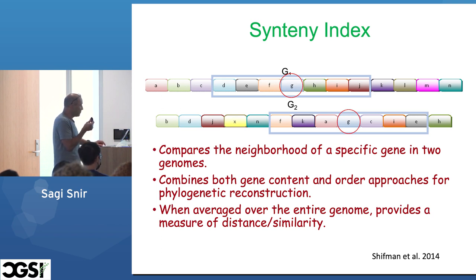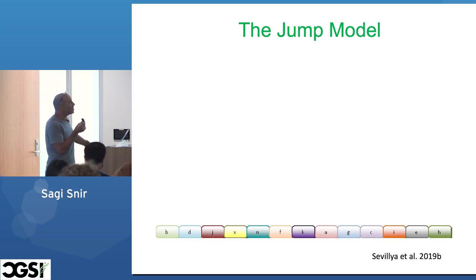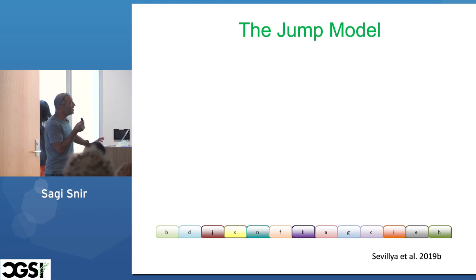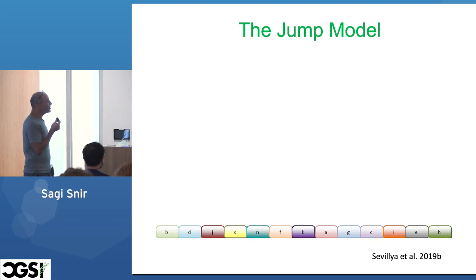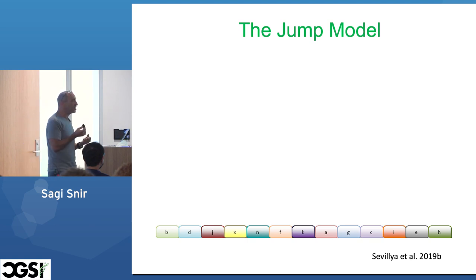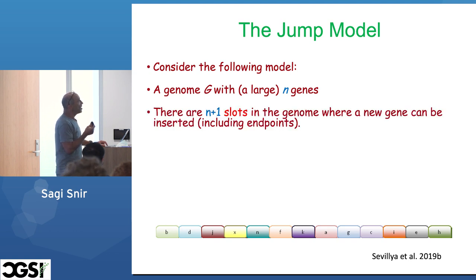The Synteny index can be used to construct trees, and since 2014 this is what we have been doing. In 2018, Mike Steel came to visit Ben Shaw at Tel Aviv. I came to Mike and told him the following model: consider a genome G with large N genes. There are N+1 slots in a genome where a new gene can be inserted.